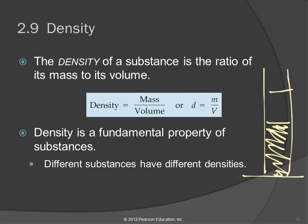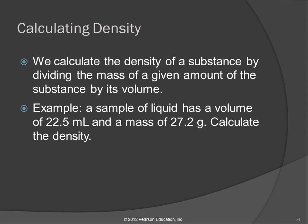Different substances have different densities. One way we can identify different substances is by their densities. There are a lot of things that look alike — hexane, chloroform, and water all look like clear liquids. But we can identify them based on their densities. The hexane will float on water and the chloroform will sink.